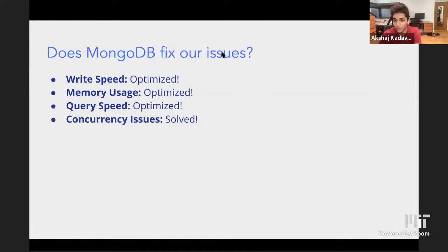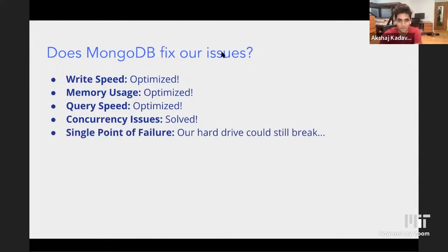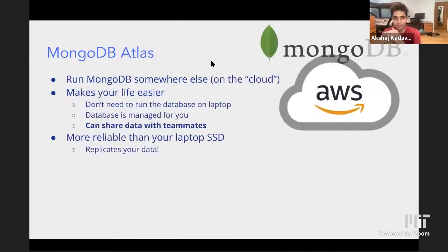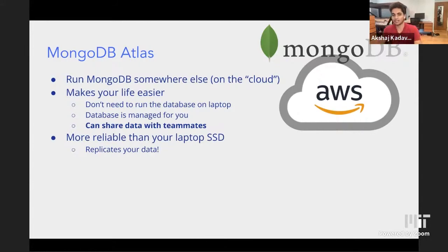MongoDB fixes everything — now everything works because we're storing everything in MongoDB. Except wherever MongoDB is physically located, you could still take a baseball bat and smash through it and lose all your data. The fix is to put it on the internet, in the cloud — then no one can delete all your data. That's what Atlas is. You made an account on Atlas so that no one can destroy your MongoDB, because it's on the cloud.